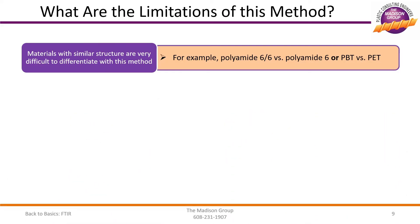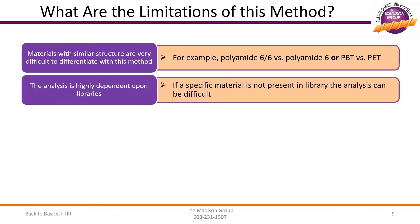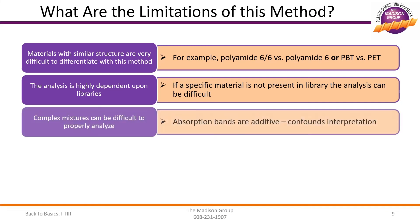Additionally, specific grades of material within a family — for example, Lexan-121 versus Lexan-141 — will not be distinguishable with this method. Another limitation is the heavy reliance on the libraries for interpretation. While in-depth knowledge of organic chemistry can allow for some interpretation of peaks, if a specific compound is not in the library used for comparison, it can be difficult to precisely identify the substance. As shown in our interpretation example, absorption bands are additive, which can confound the interpretation of the spectra. Weak overlapping bands may not be observable in the overall spectrum.